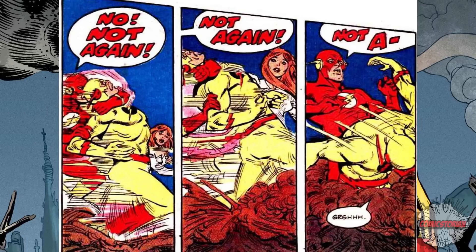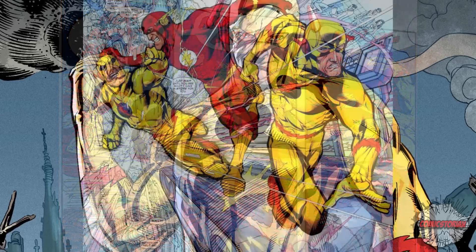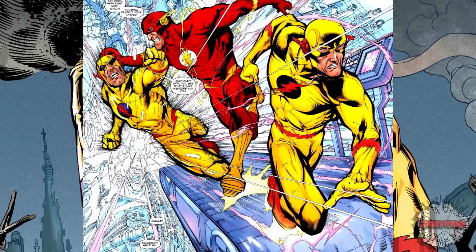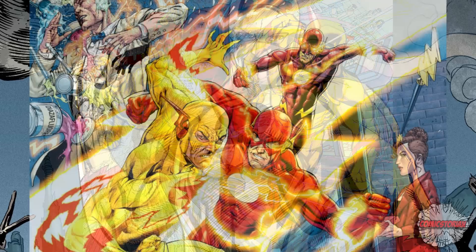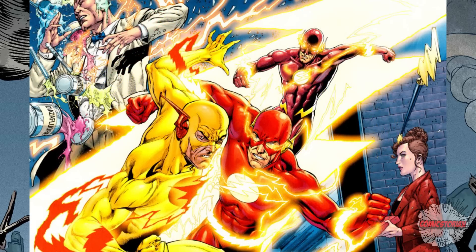Barry then traveled to the 30th century to live his new life with a new version of Iris West. Now, Eobard Thawne didn't stay dead. Eventually his successor, who was going by the name Zoom, pulled Eobard out of the time stream just before Barry killed him. Zoom and Professor Zoom tormented Wally West over and over until a version of Barry Allen came out of the time stream just before his own death, and he put Eobard back in his proper timeline, allowing him to die again and for Wally to defeat his version of the Reverse Flash.